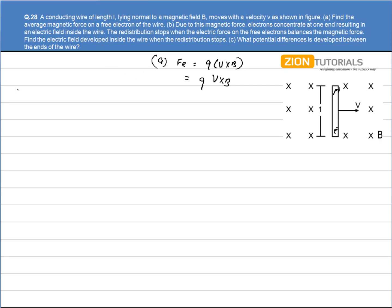In the second case, due to this magnetic force electrons concentrate at one end. Electrons will concentrate at one end and result in an electric field inside the wire. Protons are upside, electrons are downside, so there will be an electric field generated between them. The redistribution stops when the electric force on the free electron balances the magnetic force.